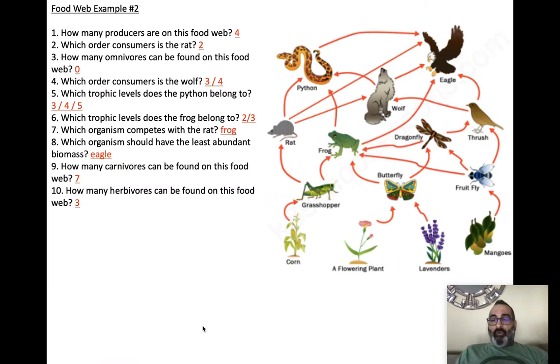All right. So this is analyzing a little bit more detailed food web. Beware of what you're looking for. Producers have no arrows pointing at them. You're going to get some more complicated food webs to look at. All right. Good luck.